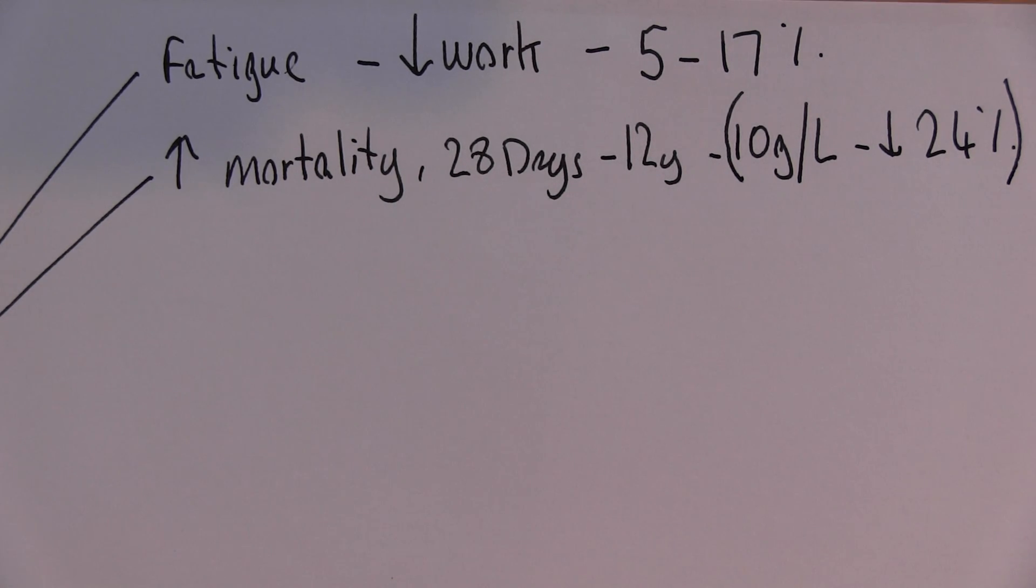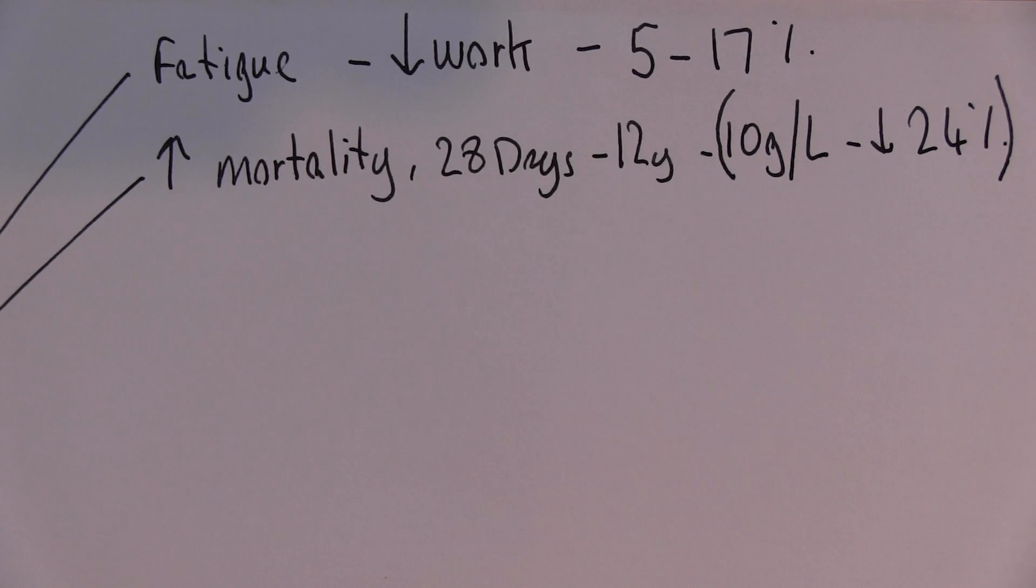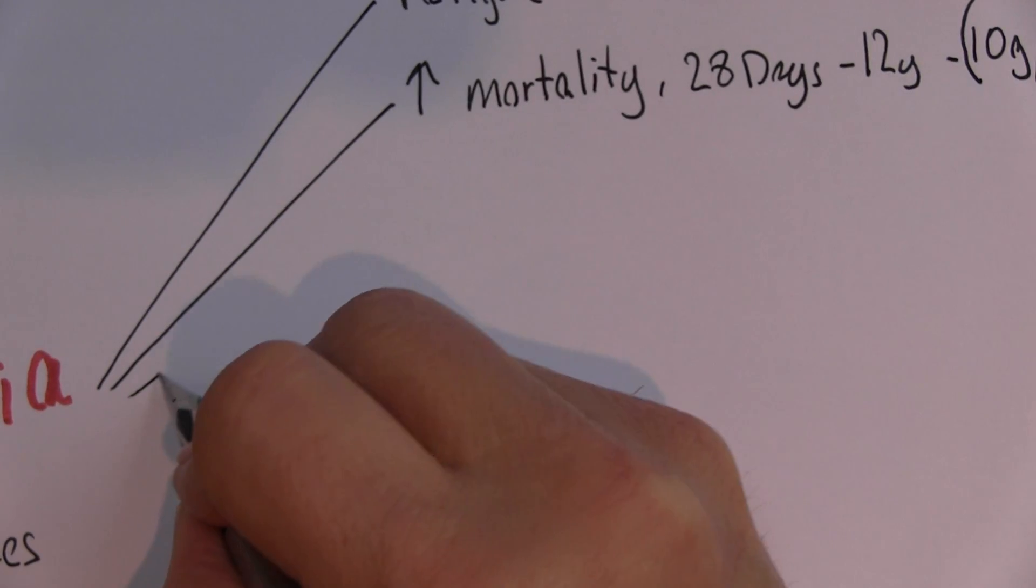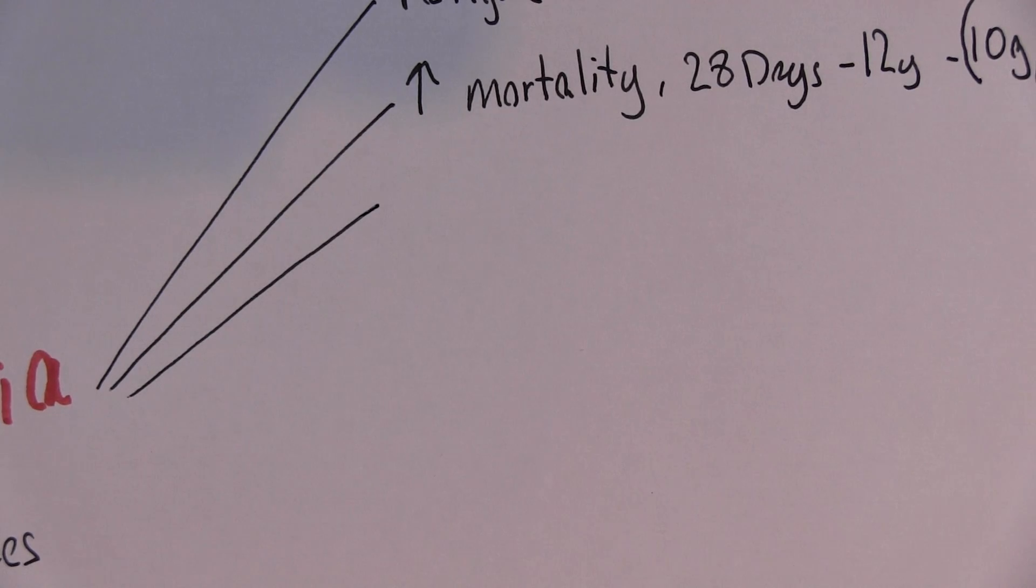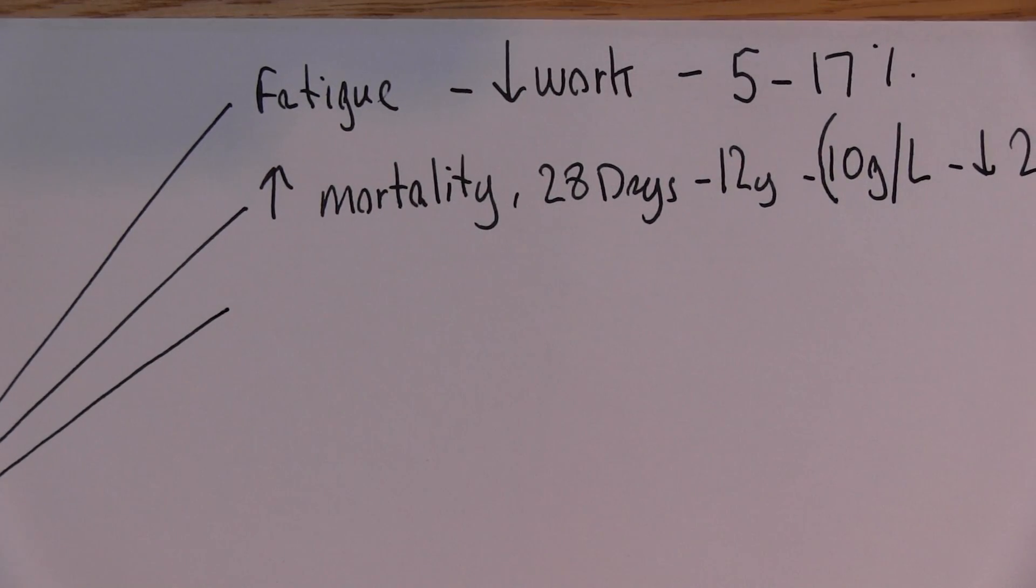Now another problem with anemia is if the blood supply is not going to the brain. Well, the blood's going to the brain but the oxygen is not.